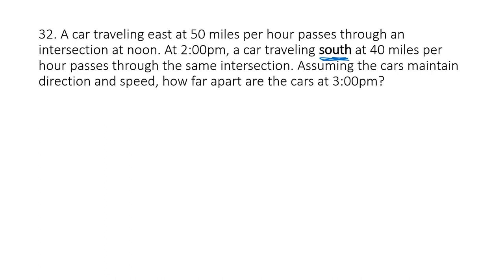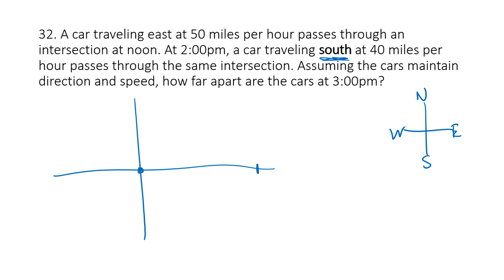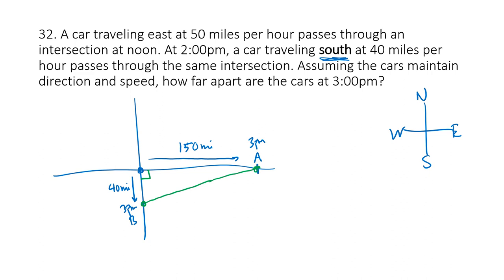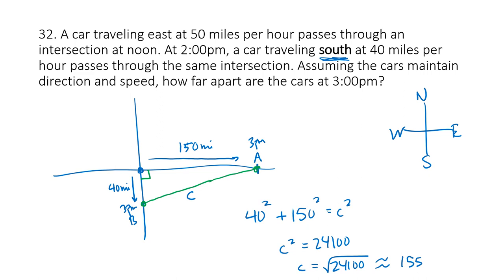A similar problem, but now car B travels south instead of west — so we need a two-dimensional picture. At 3 pm, car A is 150 miles to the east (right), and car B is 40 miles to the south (down). The distance between the two cars is the hypotenuse of a right triangle with legs 150 and 40. Using the Pythagorean theorem: c² equals 150² plus 40² equals 22,500 plus 1,600 equals 24,100. So c equals √24,100, approximately 155.24 miles.